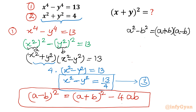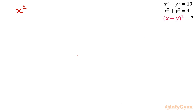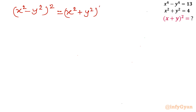In place of a I will consider x², and in place of b I will consider y². So (x² minus y²)² equals (x² plus y²)² minus 4x²y². To verify: (x² plus y²)² expands to x⁴ plus y⁴ plus 2x²y², and subtracting 4x²y² gives x⁴ plus y⁴ minus 2x²y², which matches the left-hand side expansion.